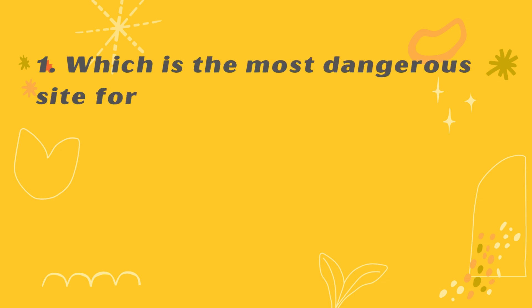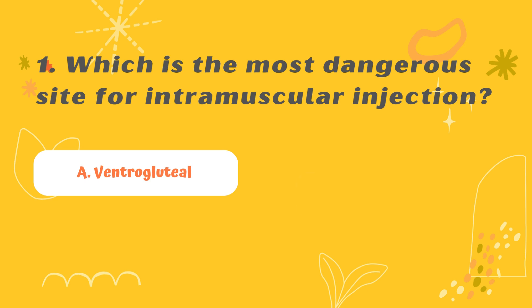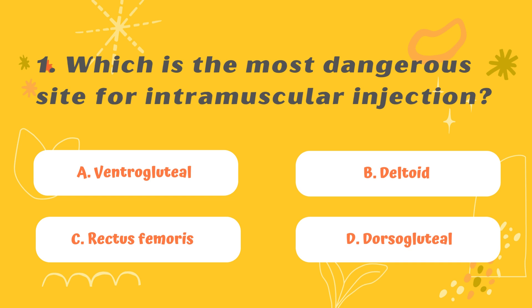Question 1: Which is the most dangerous site for intramuscular injection? Option A: Ventrogluteal. Option B: Deltoid. Option C: Rectus femoris. Option D: Dorsogluteal.